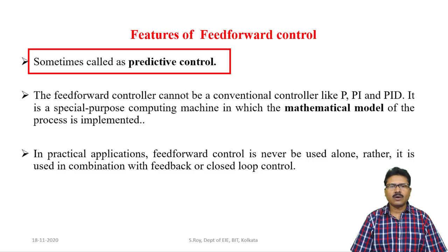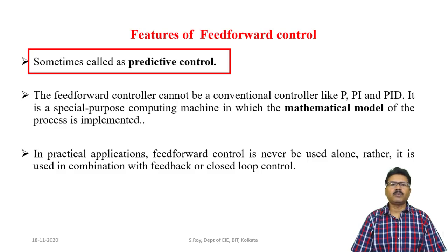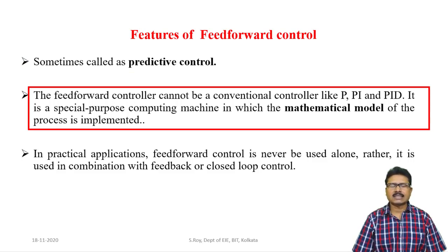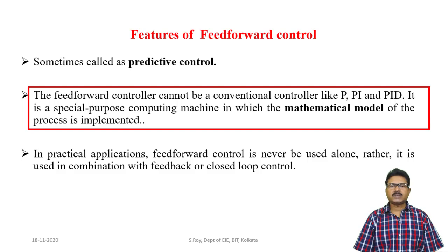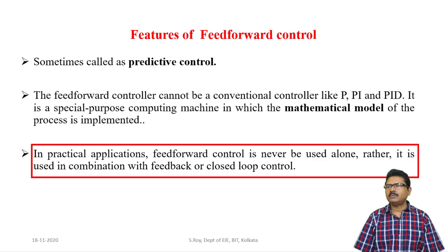Feedforward control is sometimes called a predictive control system because it predicts the control variable instead of measuring it. A feedforward mathematical model, based on the process characteristics, predicts what the output might be due to different load variables. Unlike conventional controllers like PID, feedforward control is a special-purpose computing system with a mathematical model of the process implemented within it. In practice, feedforward control is never used alone — it is used in combination with feedback or closed-loop control.